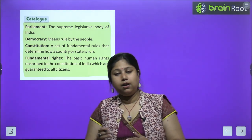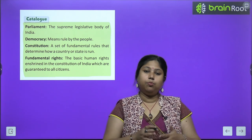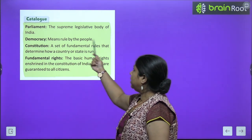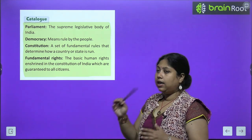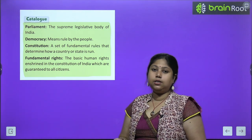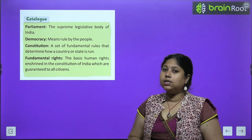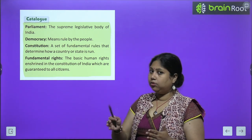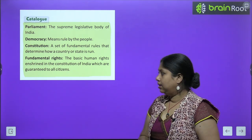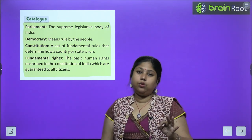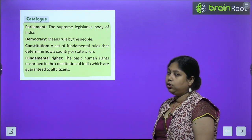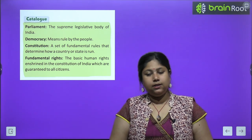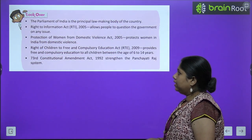Today we studied how Parliament and Constitution work hand in hand so that the government can function properly. Key terms from this chapter: Parliament — the supreme legislative body of India; Democracy — where people can give their opinion, share views, and through their opinion select representatives and govern; Constitution — a set of fundamental rules determining how a country is governed; Fundamental Rights — the basic human rights guaranteed to all citizens by the Indian Constitution.